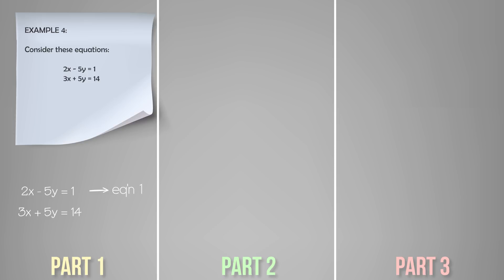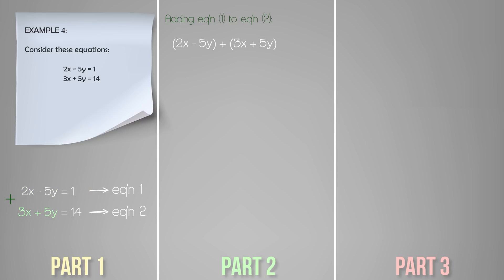Now let's take a look at one final example: 2x minus 5y equals 1 and 3x plus 5y equals 14. The coefficients of y are already the same, so we do not need to find any multiples. The first equation contains negative 5y while the second contains positive 5y — these will cancel if added. Remember: for alternating signs, add. Adding the equations: 2x minus 5y plus 3x plus 5y equals 1 plus 14. Expanding gives 2x minus 5y plus 3x plus 5y equals 15.